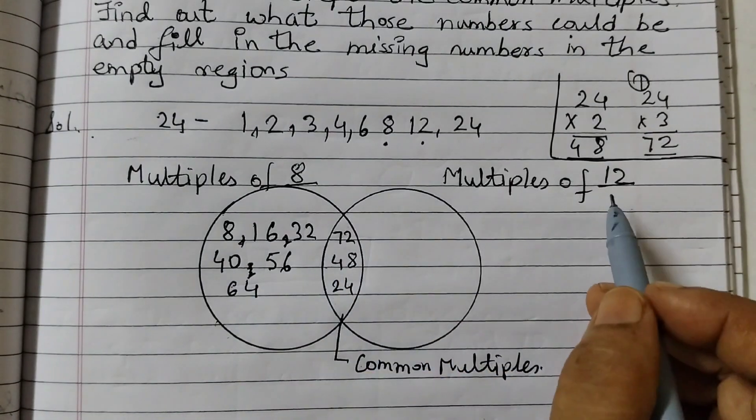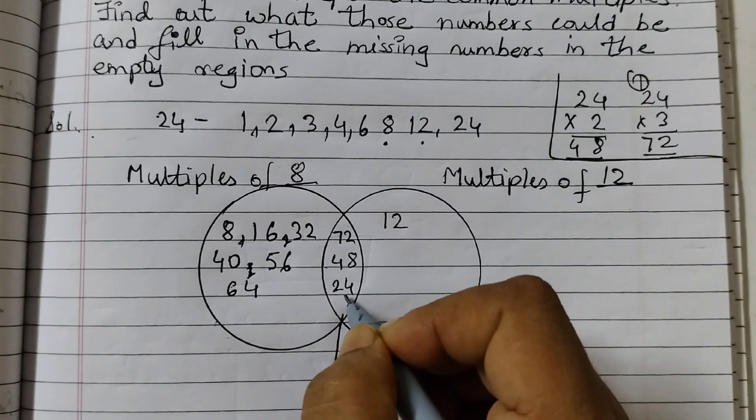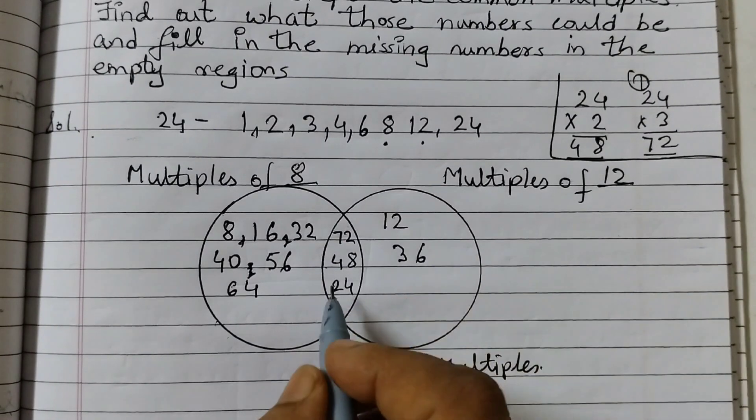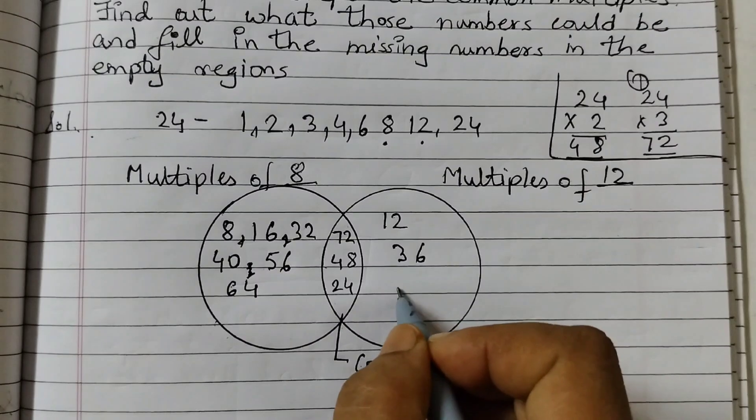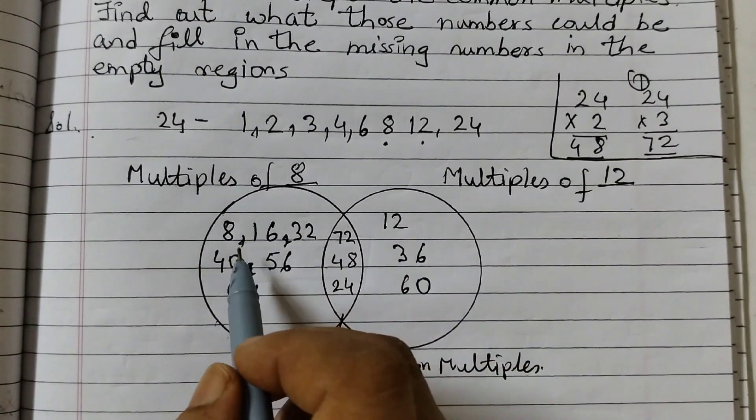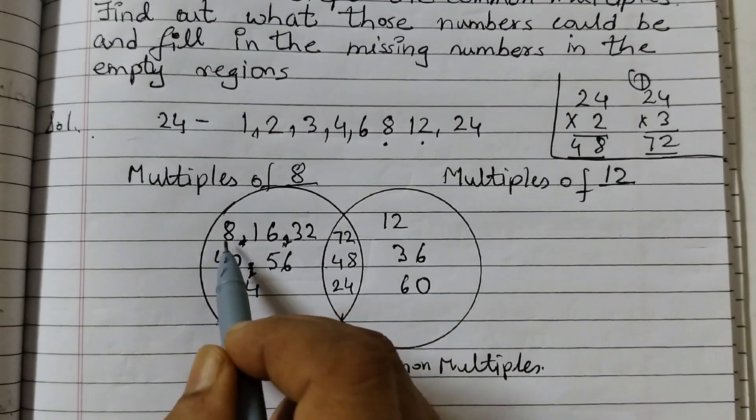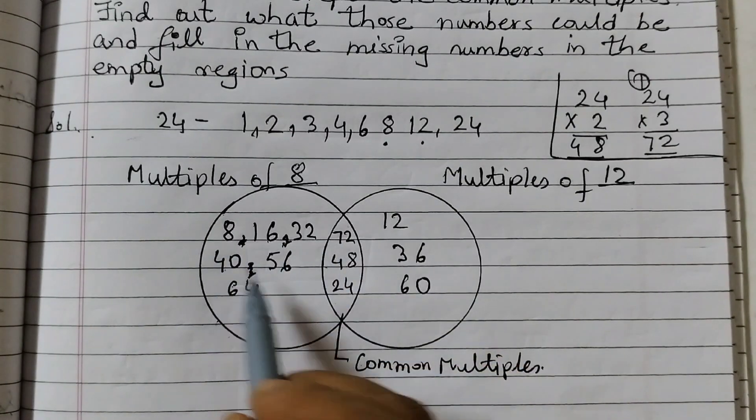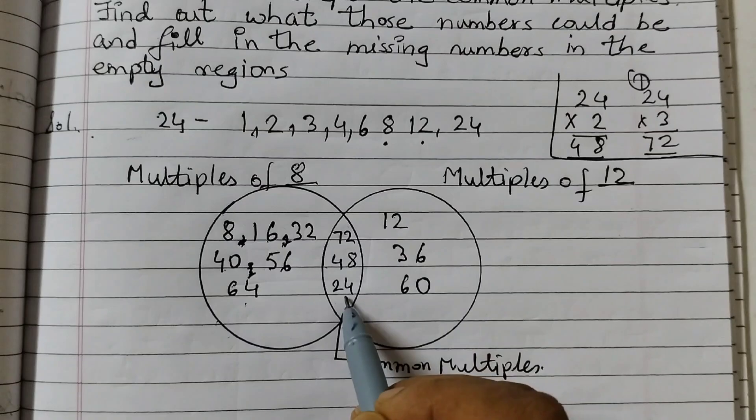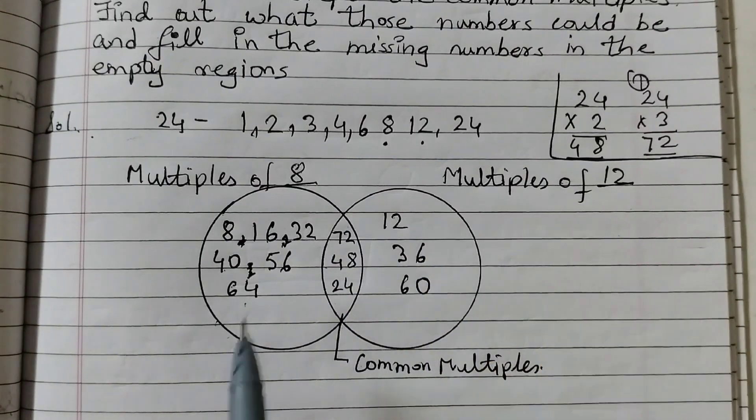Now for 12, 12 ones are 12, 12 twos are 24 given here, 12 threes are 36, 12 fours are 48, 12 fives are 60, 12 sixes are 72. Here on the left hand side, please don't put the commas, by mistake I put here. 8, 16, 32, 40, 56, 64 common multiples, and these are the numbers for 12, multiples of 12.